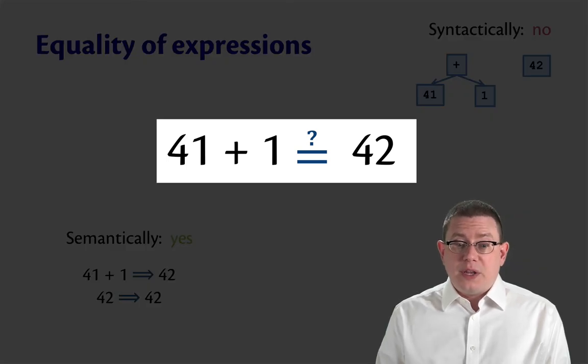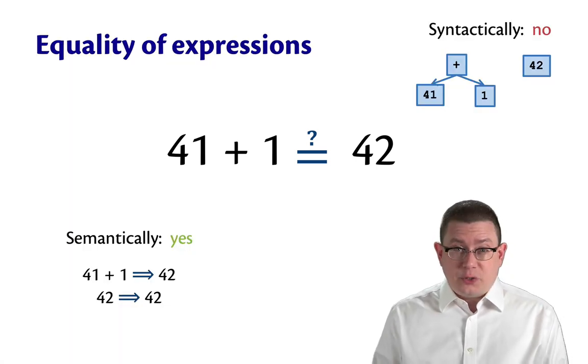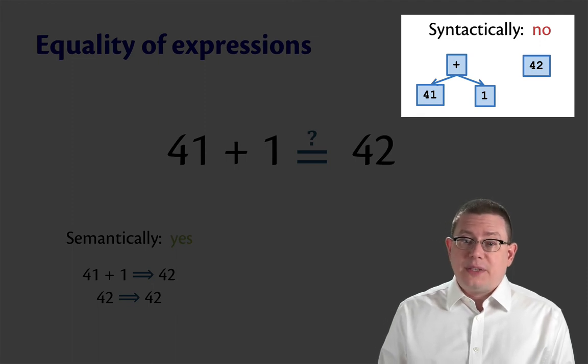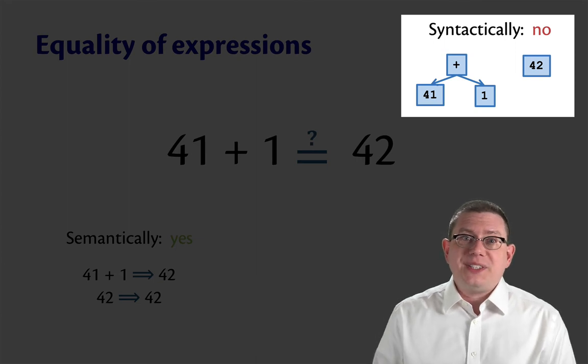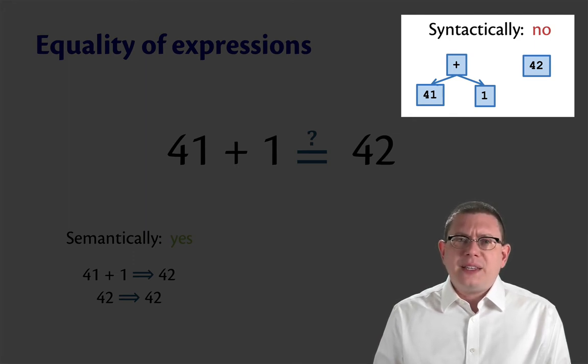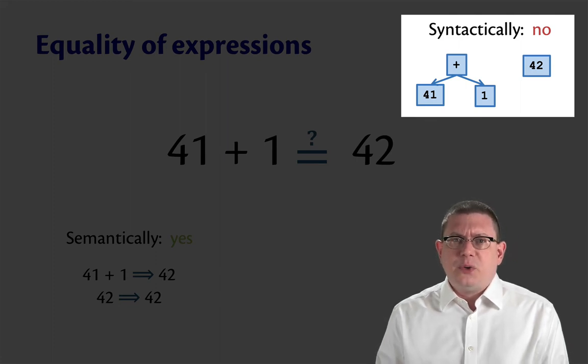Is 41 plus 1 equal as a piece of code to 42? There's at least a couple different answers we could give to that question. One is the syntactic answer. These syntactically are not the same pieces of code. You could represent them as trees, for example, as you learned in 2110 to represent Java expressions as trees. Well, the tree containing a node with plus and then sub-children 41 and 1, that's clearly not the same tree as 42. So syntactically, these are not the same.